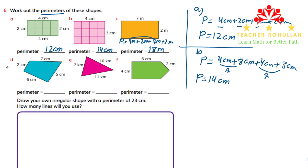Let's now work on shape D. Shape D has sides of different sizes: seven, five, six, two, and two centimeters. We follow the same method and just add the lengths. P equals seven centimeters plus five centimeters plus six centimeters plus two centimeters plus two centimeters. Seven plus five is twelve, twelve plus six is eighteen, eighteen plus two is twenty. So the perimeter of shape D is equal to 20 centimeters.